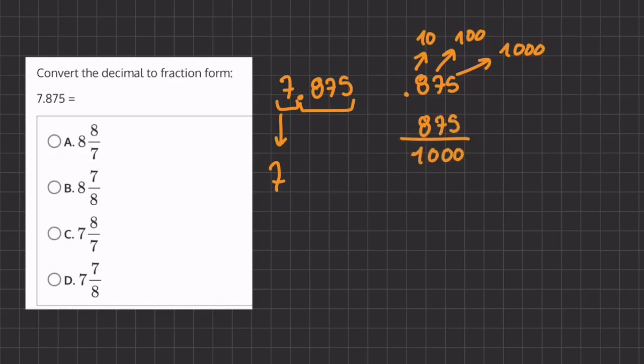All right, so now this is our fraction, but we do have to simplify it. And we can simplify it by dividing the numerator and denominator by 25. Now it might be a little tough to divide right away this 875 by 25.